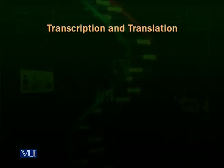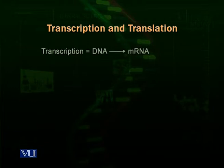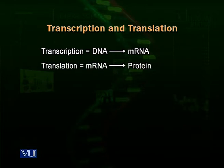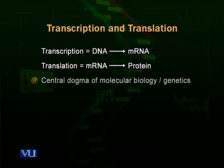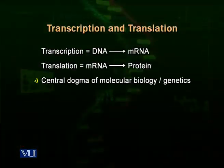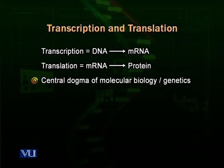Looking at our diagram, transcription is from DNA to an RNA molecule. This particular RNA molecule is called messenger RNA. So DNA to messenger RNA is transcription, and messenger RNA to protein is translation — the language of DNA is translated by the messenger RNA into protein. We call this the central dogma of molecular biology or molecular genetics. The central dogma is the central theory around which all of that science revolves: DNA codes for RNA via transcription, and RNA codes for protein via translation.